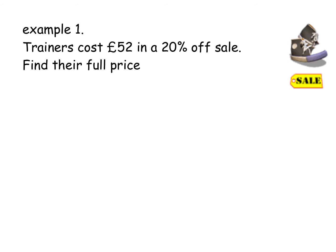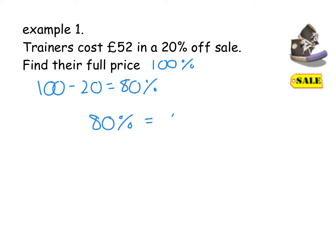I always talk about things in a sale. So we've got a pair of trainers here in the sale. We know it costs £52 and we know that there was 20% off. So I want to find the full price. Please remember that the full price is the equivalent of 100% — that is what we are trying to find. Now, if you took 20% off these trainers, what is 100 take away 20? It's 80. So when you've worked out the price of £52 for these trainers, you've only paid 80% of the full price. So we start by writing 80% equals £52. That's your starting point, and if nothing else, that gets you one out of three marks.